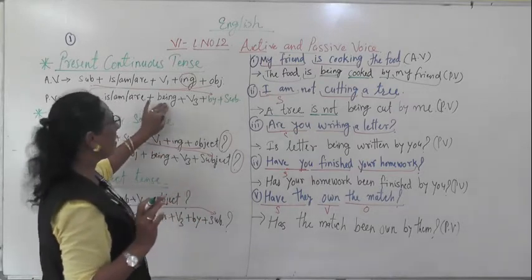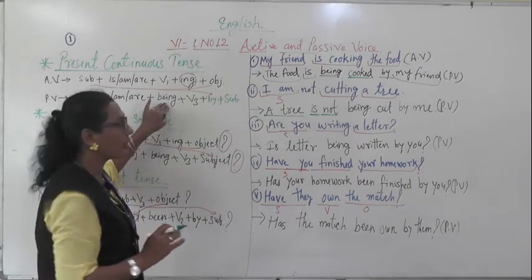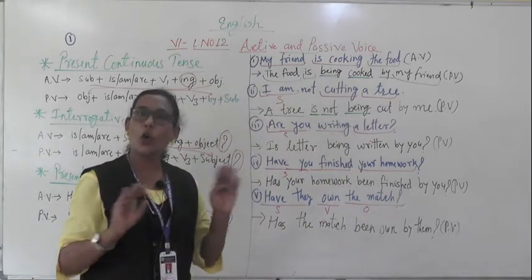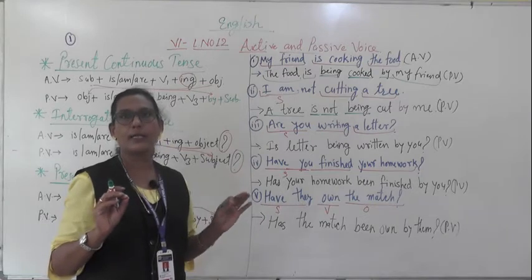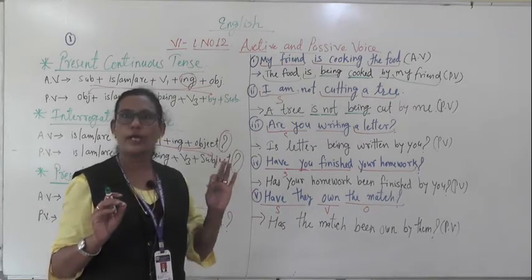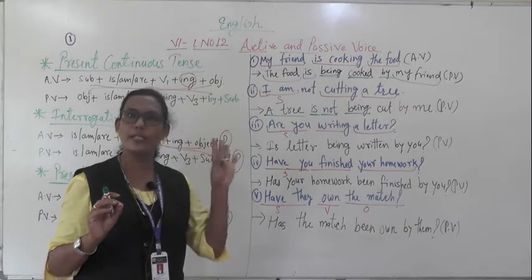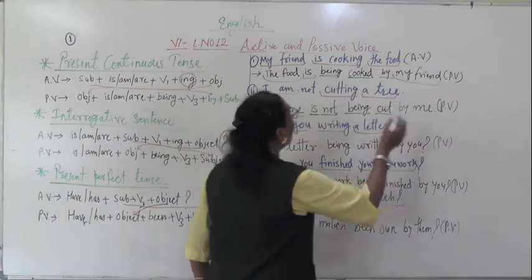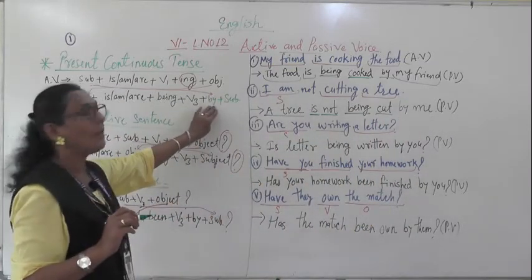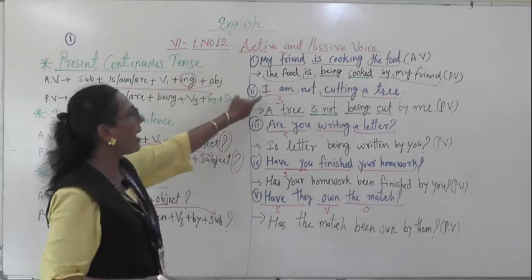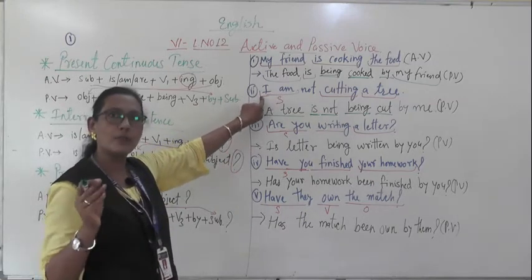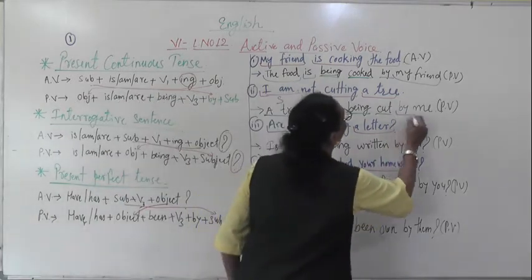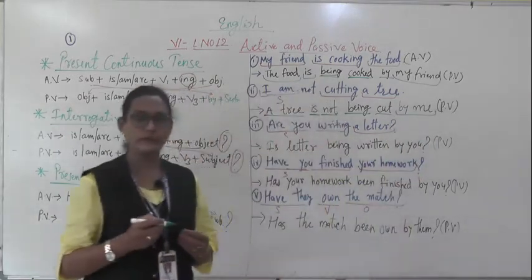As it is a negative and continuous tense, we write 'is not being cut.' The verb cut has the same spelling in V1, V2, and V3. Then 'by' is there. Whenever the subject is 'I,' it changes to 'me' in passive voice. So the passive voice is: 'A tree is not being cut by me.'